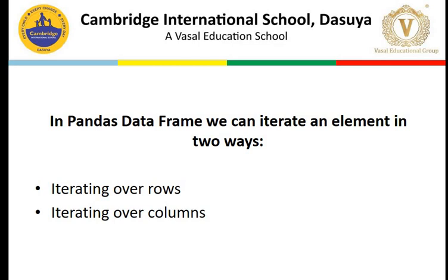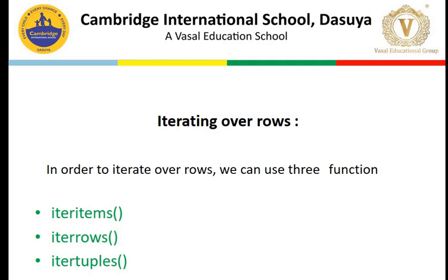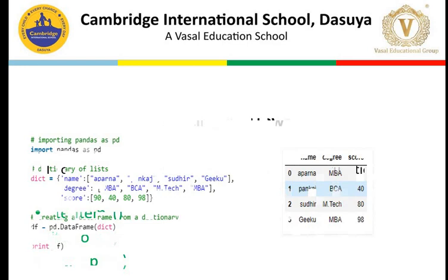First we will focus on the first method, that is iterating over rows. Under iterating over rows, we have basically three methods. The first method is iteritems, the second is iterrows, and the third is itertuples. We will see how these methods differ from each other, and what the difference between these three methods is — we will do this practically.